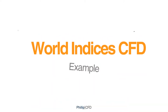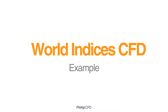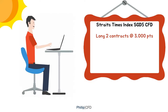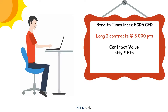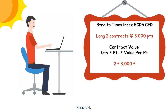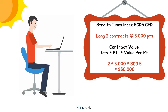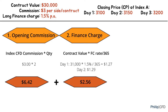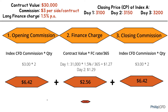Lastly, an example for world indices CFD. Using STI SGD5 CFD as an example, you place a trade to long two contracts at 3,000 points. The contract value calculation is quantity times points times value per point, which equals $30,000. Opening commission for STI is $3 per side per contract, with long finance charge at 1.5% per annum. Hence, the opening commission will be $6.42, finance charge will be $2.56 based on the respective closing prices, and closing commission will also be $6.42.